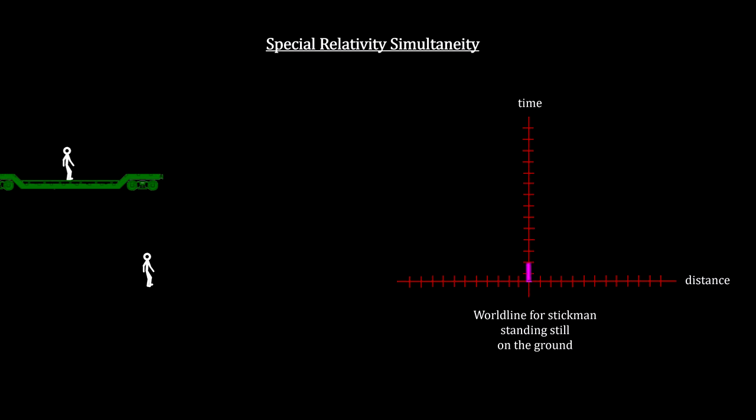The world line for the person standing on the ground is shown in purple. We'll label the lightning strikes A and B and place the two events on the space-time graph with A to the left of the person on the ground and B to the right.